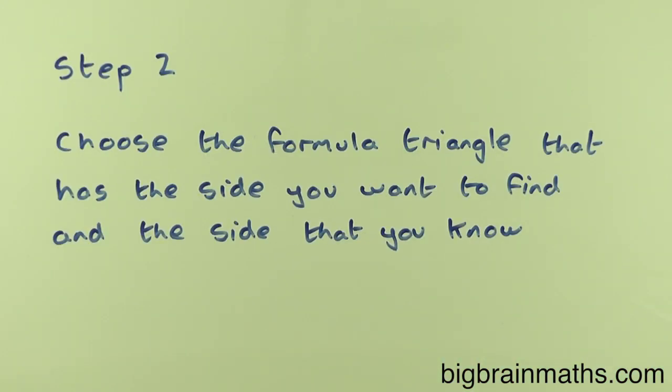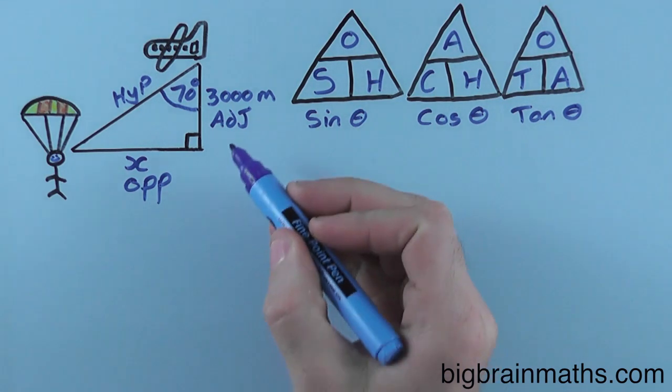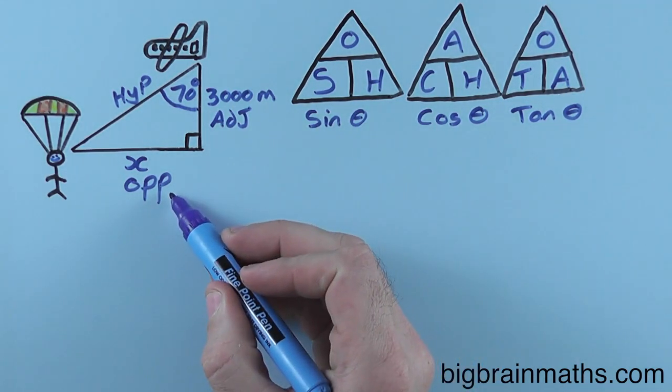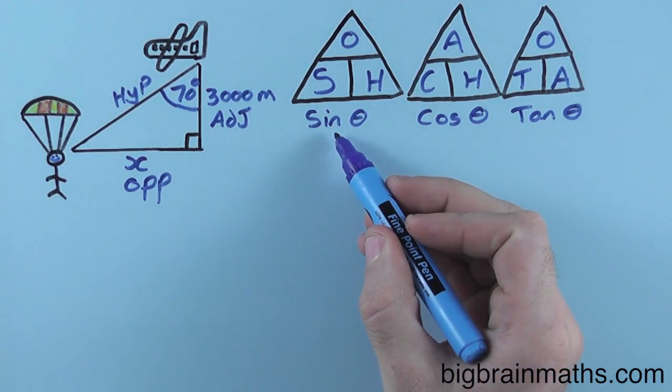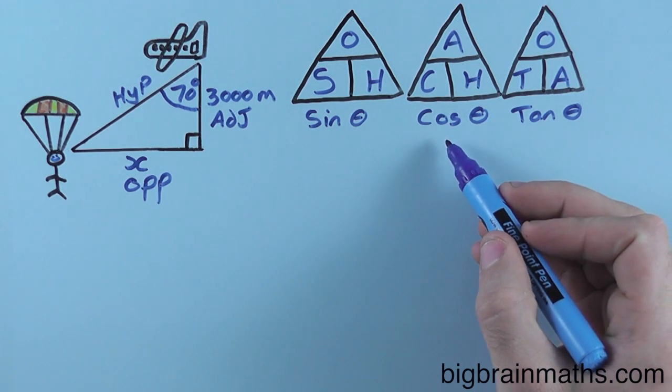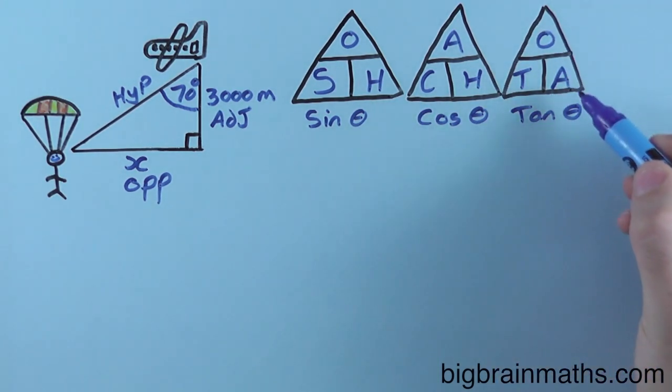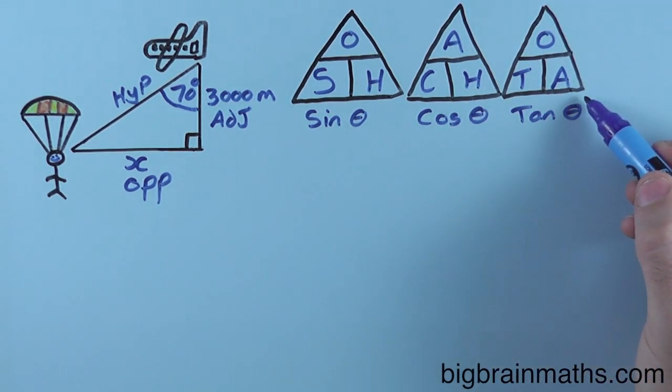Step 2: Choose the formula triangle that has the side you want to find and the side that you know. In this question, we know the adjacent and we want to find out the opposite, so I'm looking for a formula triangle that has both the adjacent and the opposite in. So in this question, we'll be using the tan triangle.